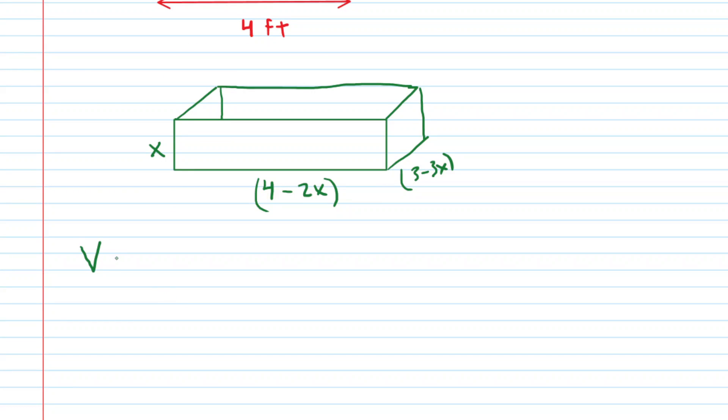We are trying to maximize the volume of this box. Now of course volume is length times width times height. So we would have the length of 4 minus 2x times the width of 3 minus 3x times the height of x. We'll put the x in the front for convenience and then what we're going to do is simplify this expression.